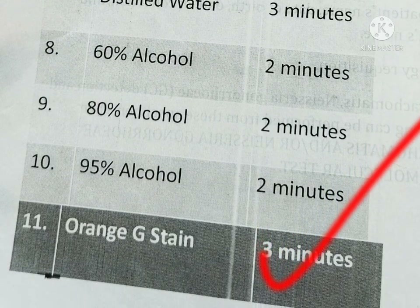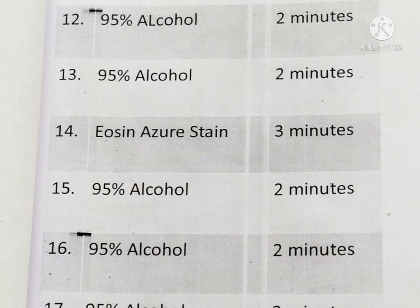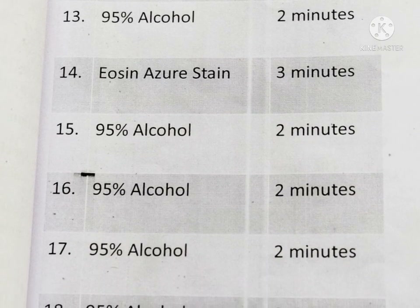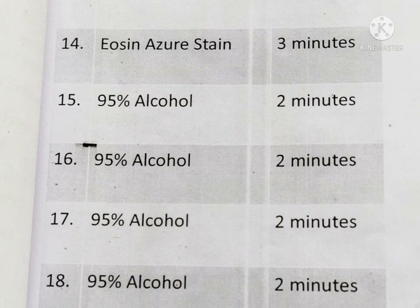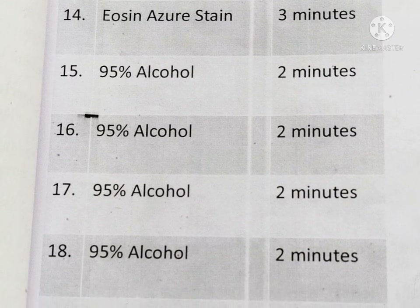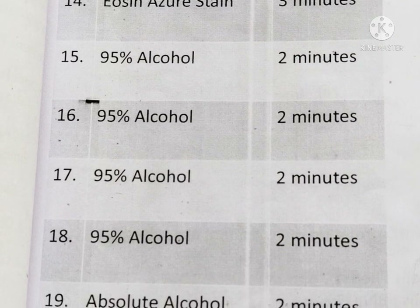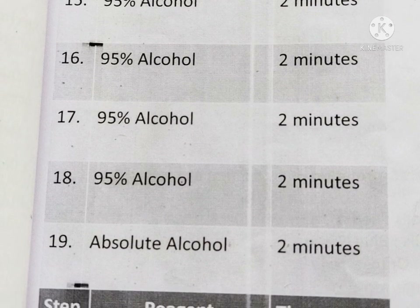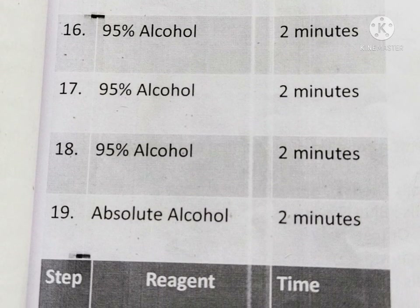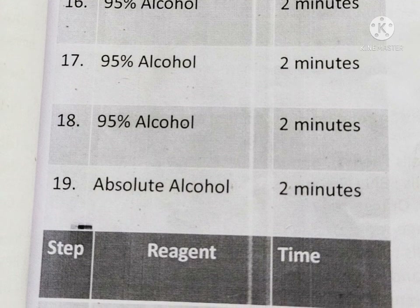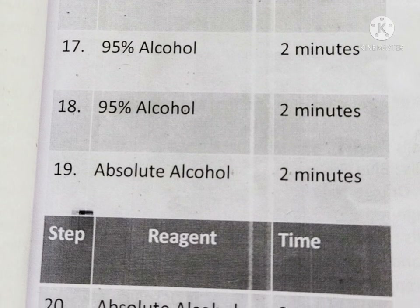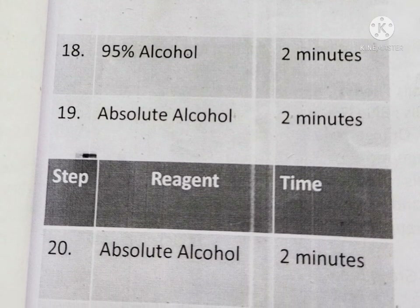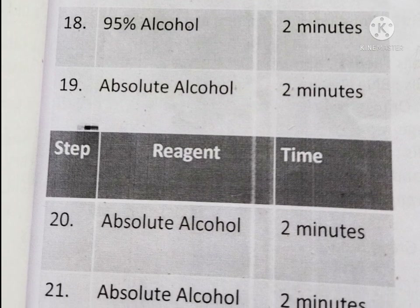Put the slide into 95% alcohol for 2 minutes. Next, 95% alcohol again for 3 minutes. Add Papanicolaou stain for 3 minutes. Next, 95% alcohol for 2 minutes. Repeat this cycle 4 times. Then take the slide and put it into absolute alcohol for 2 minutes, and repeat this 3 times.